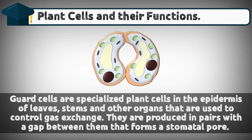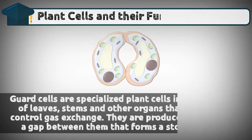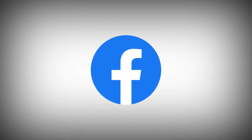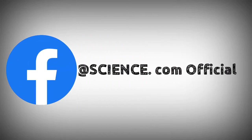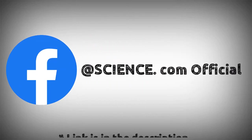Guard cells are specialized plant cells in the epidermis of leaves, stems, and other organs that are used to control gas exchange. They are produced in pairs, with the gap between them forming a stomatal pore.